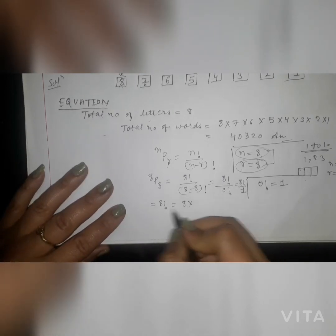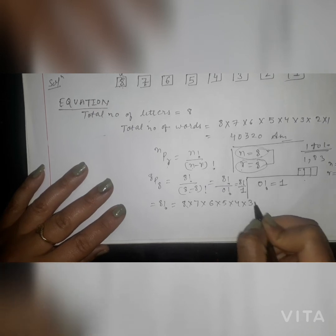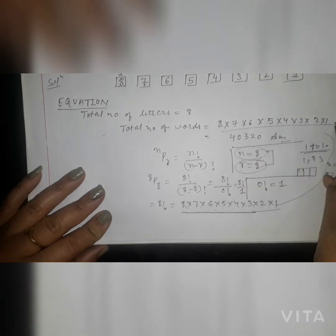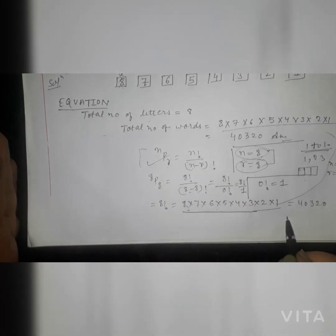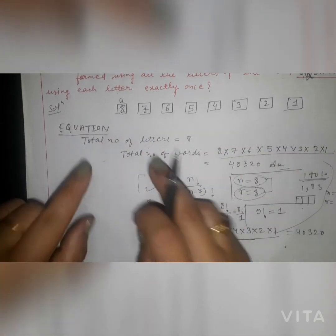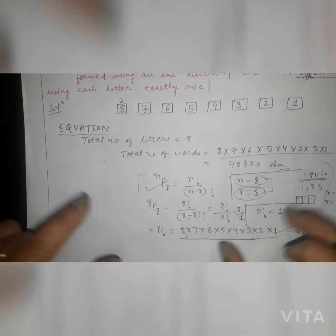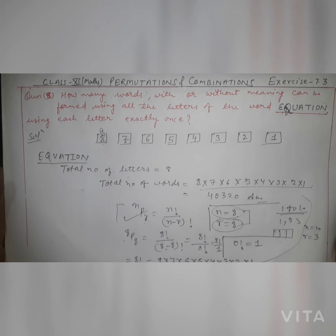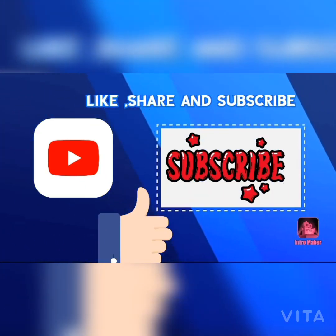So this was the comparison: in the box method we built boxes and multiplied from 8 down to 1, and with the permutation formula we directly applied nPr and got the same answer 40320. It was a very easy question. We will move to question number 9 in the next video. Students, if you like my video, please like, share, and subscribe to my channel. Thank you for watching.